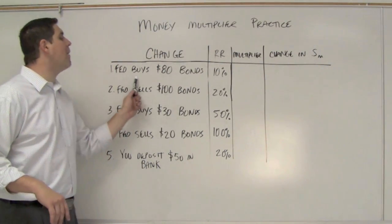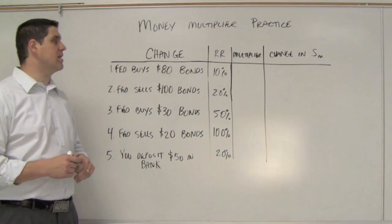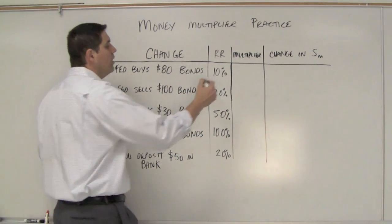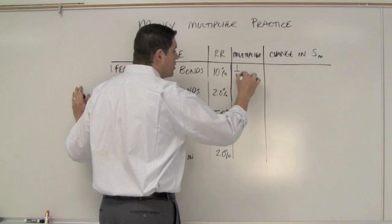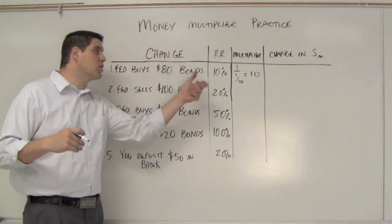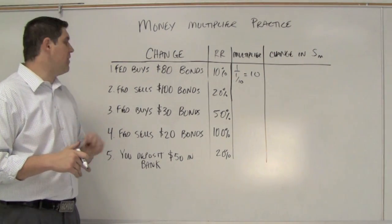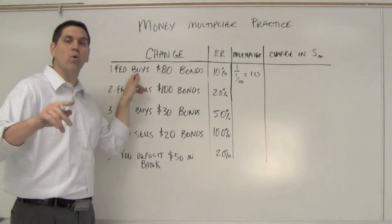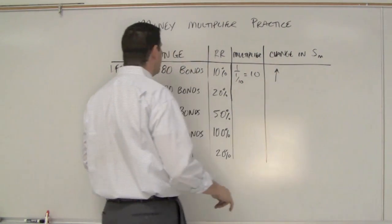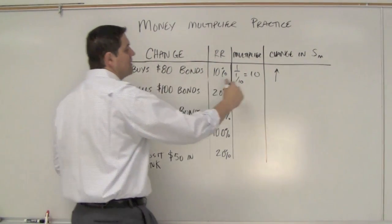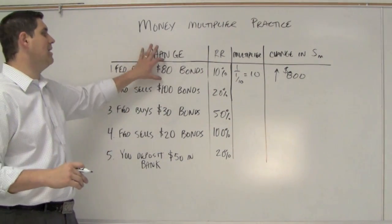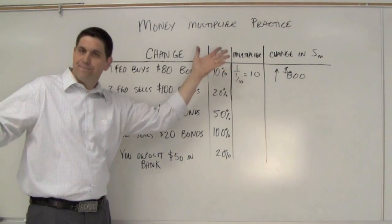All right, let's go over the answers. If the Fed buys $80 worth of bonds and the reserve requirement is 10%, first calculate the multiplier. The multiplier is 1 over 1/10, so the multiplier is 10. Any amount of money put in or taken out of the economy gets multiplied by 10. In this case, we're buying bonds. We know the rule: buys bigger. Money supply would be bigger, so the change in money supply would increase. It would be 80 times 10, so this would be an $800 increase in money supply because that $80 gets multiplied.